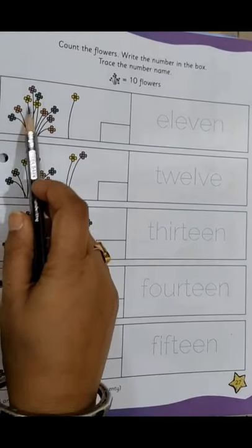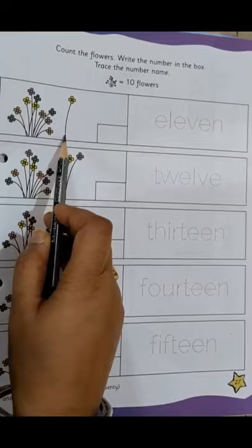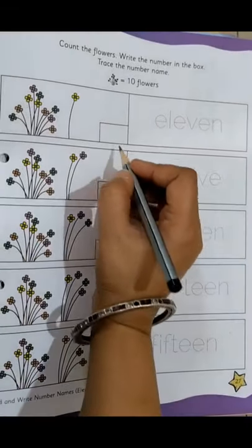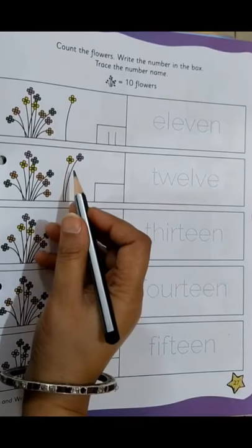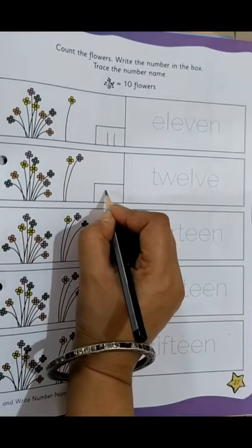So, the first one, we have a bunch of 10 flowers and one, 10 and one, 11. So you will write 11 out here. Then 10 flowers and 2 flowers, that is 12. So you will write 12 out here.